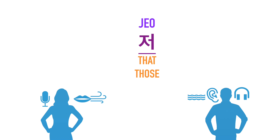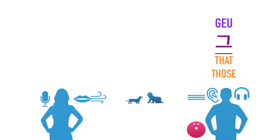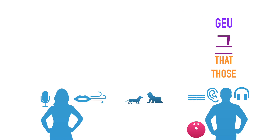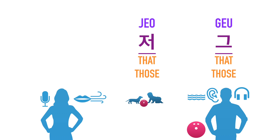Let's recap. The demonstrative determiner 저, learned in lesson 9, is used when describing something that's far from both the speaker and the listener. Whereas 그 is used to describe something relatively closer to the listener than the speaker. It may be a little confusing at first because in English you just have 'that' or 'those' for both cases, but in Korean and Japanese we actually have different words for them.